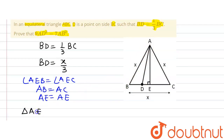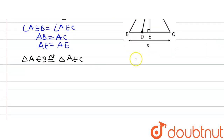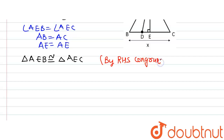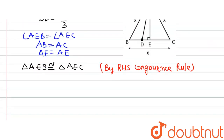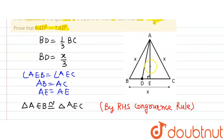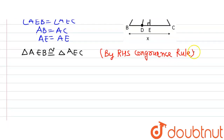So triangle AEB is congruent to triangle AEC by RHS congruence criteria — there is a right angle which is equal, the hypotenuse AB is equal to AC, and side AE is common in both triangles. Since the triangles are congruent, their corresponding parts are also equal, so BE is equal to EC.